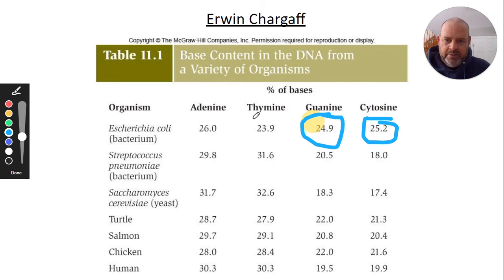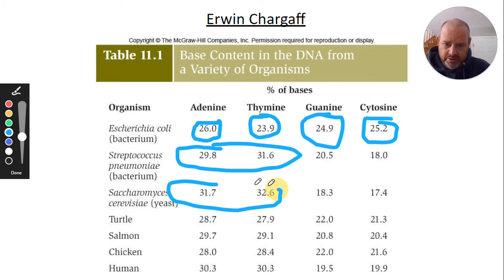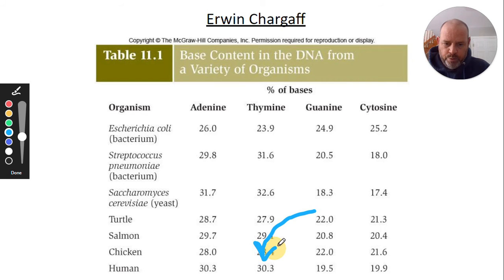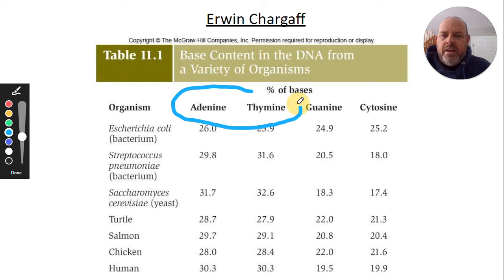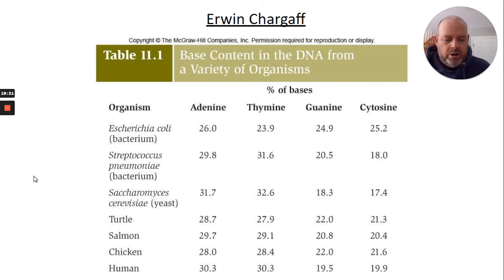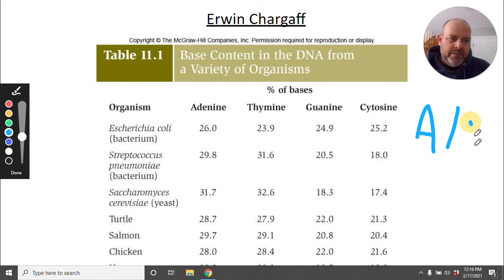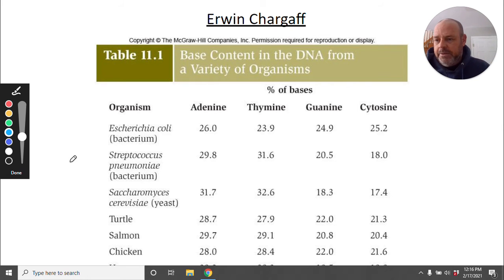Looking at the percentages, adenine and thymine are about equal across organisms — around 25% each in many cases, and for humans both come in at about 30.3%. Guanine and cytosine are also very close to each other. Chargaff started thinking these pairs go together — A with T and G with C — leading to what is called Chargaff's Rule: adenine pairs with thymine, and guanine pairs with cytosine. This experiment pushed information forward.